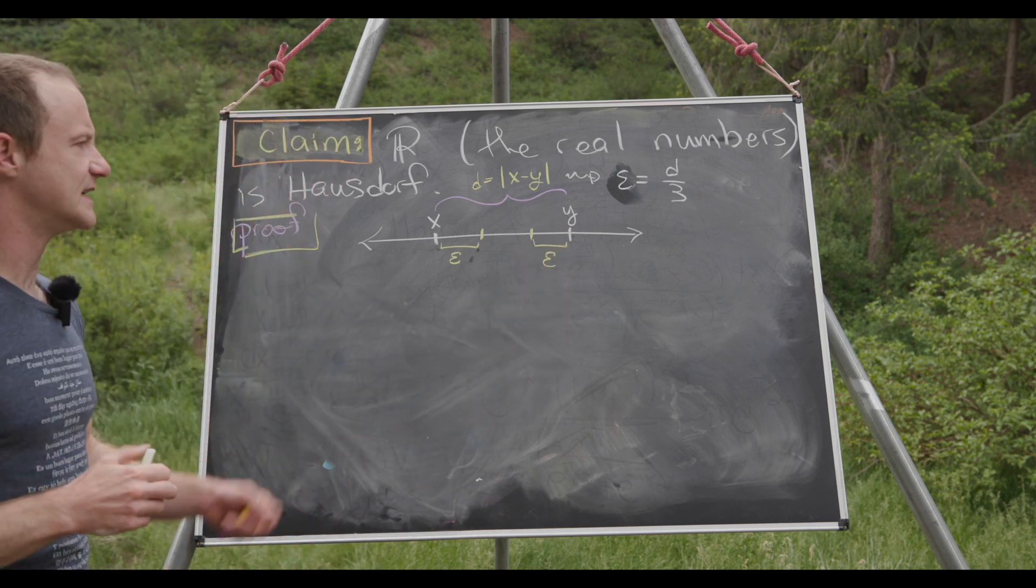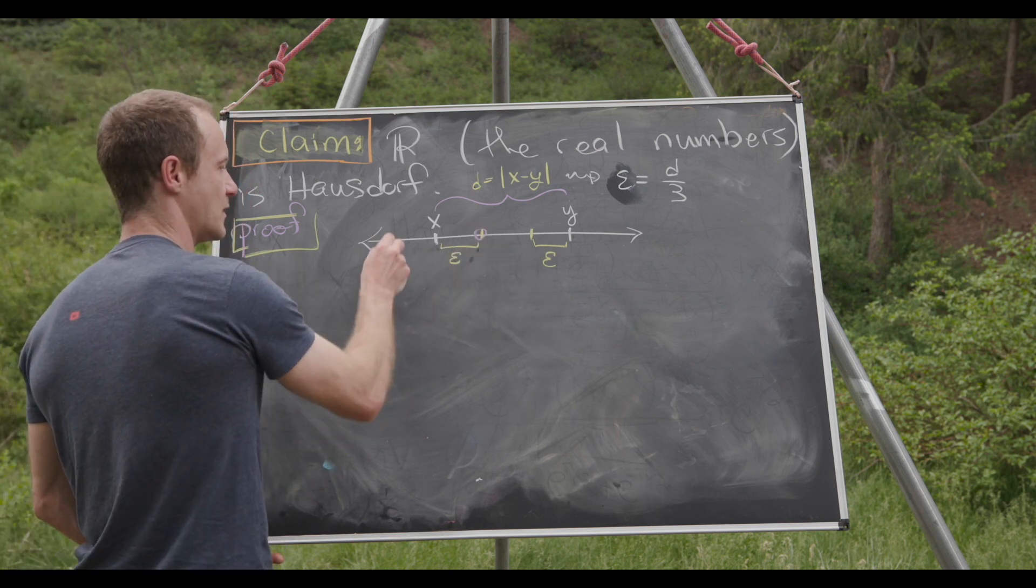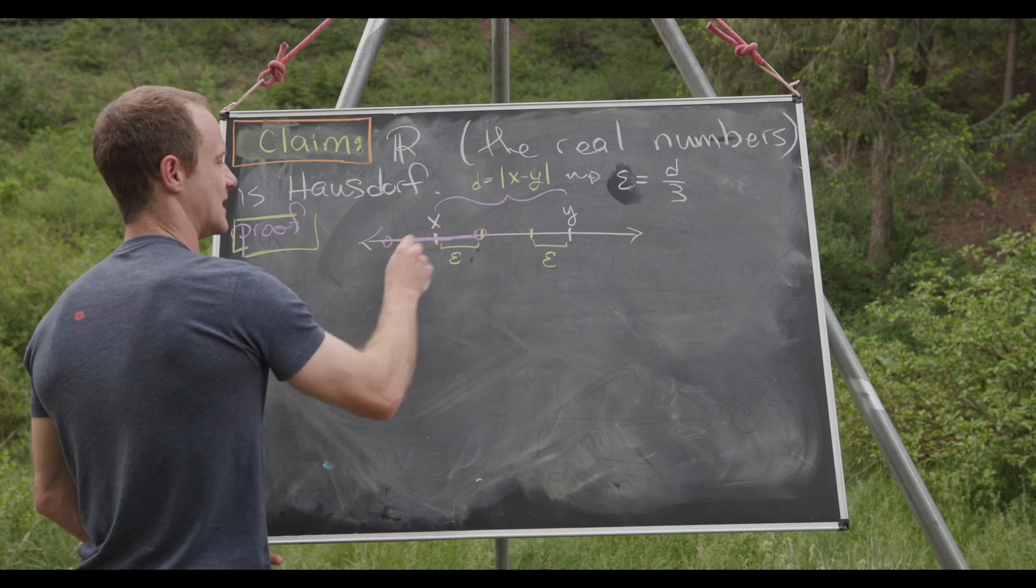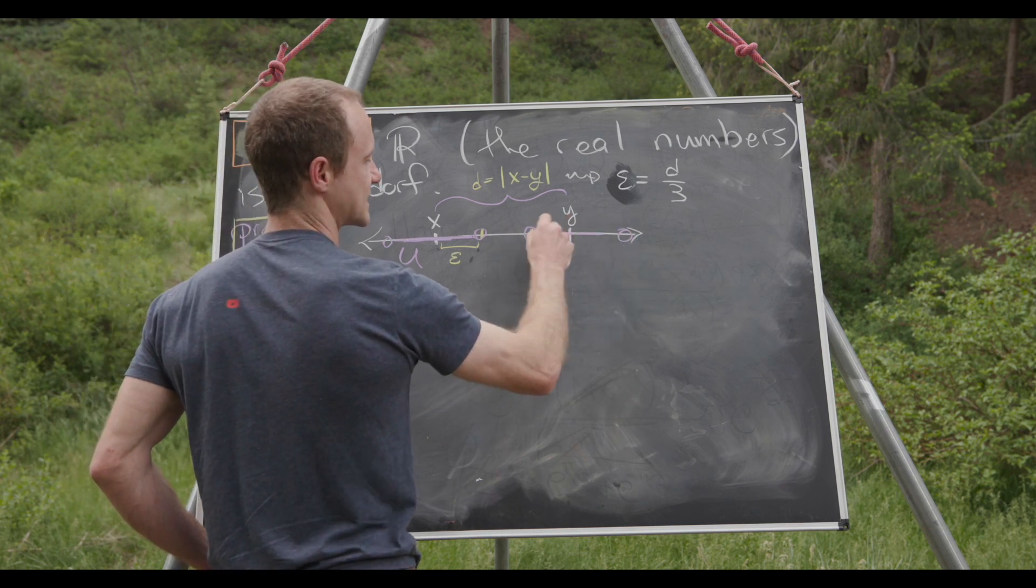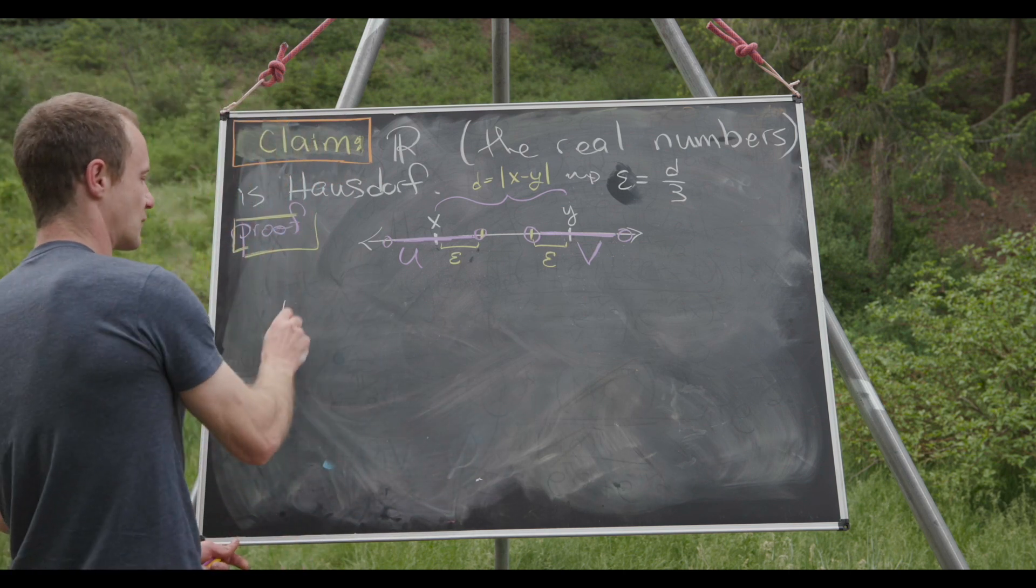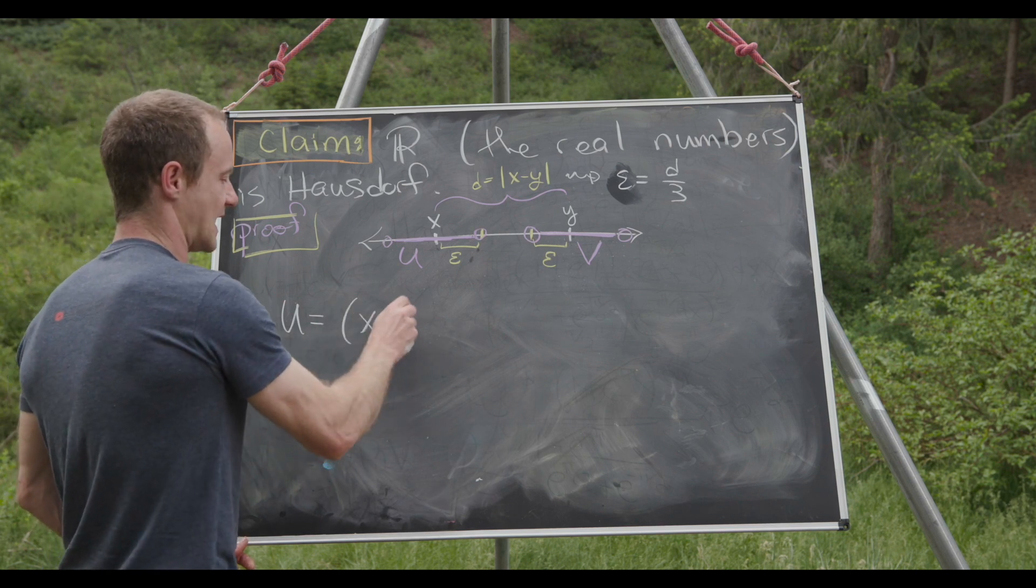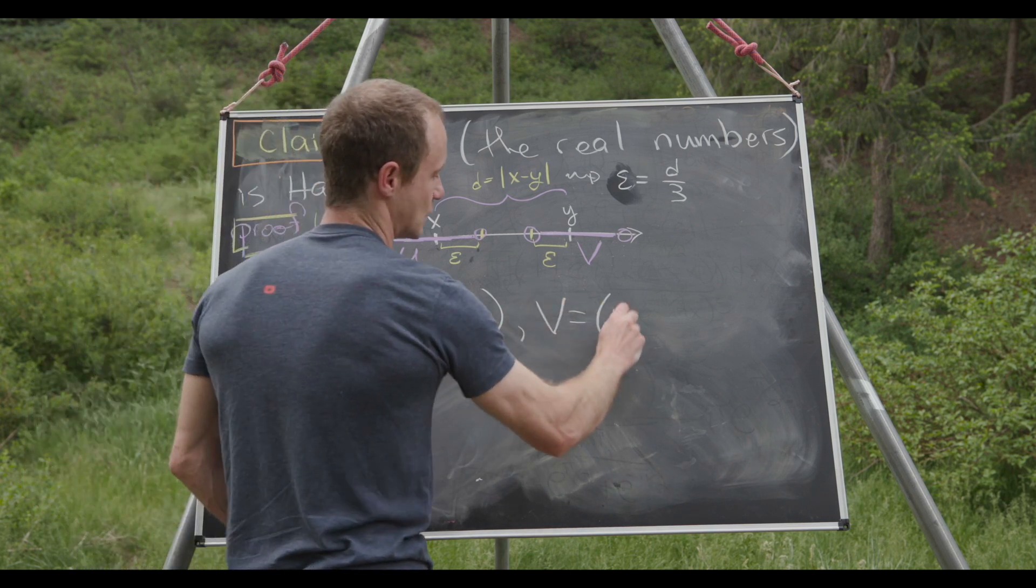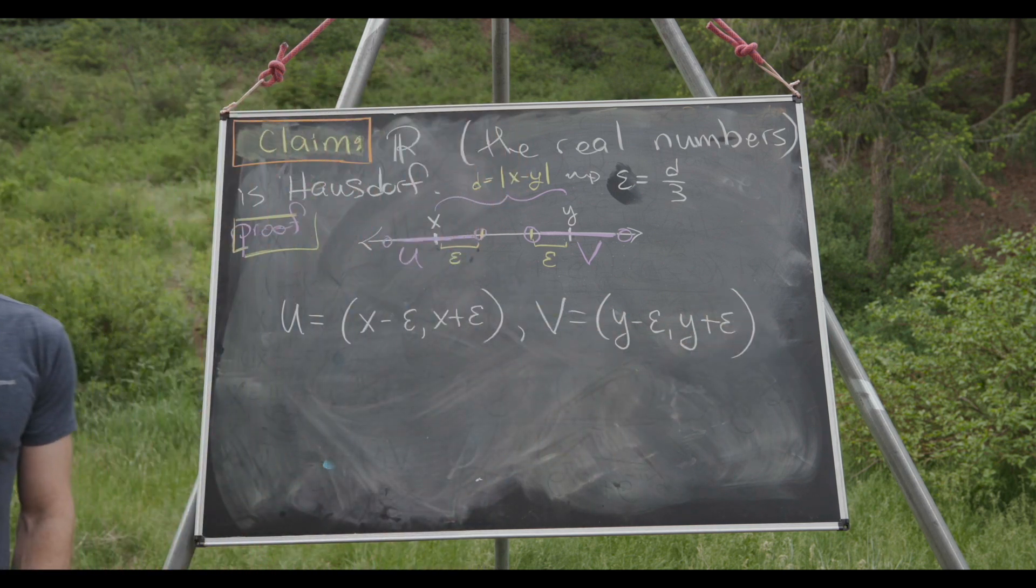So we'll take an open interval from this point to a similar point on the other side of x. So this will be our open set U. And then we'll take an open interval from here to the reflected point across y. This will be our open interval V. So in particular we can write U as the open interval from x minus epsilon to x plus epsilon, and we'll write V as the open interval from y minus epsilon to y plus epsilon.